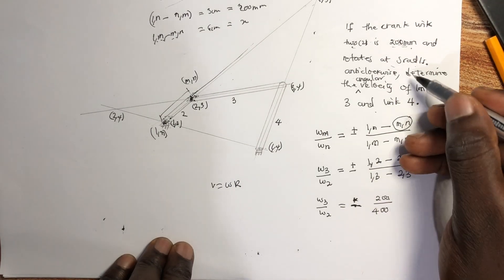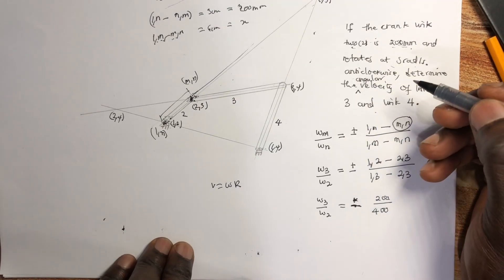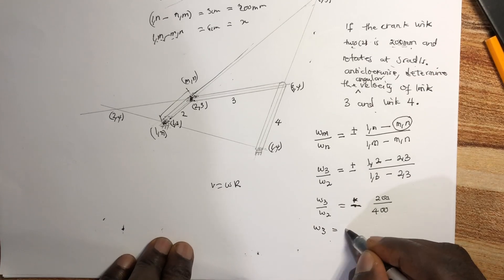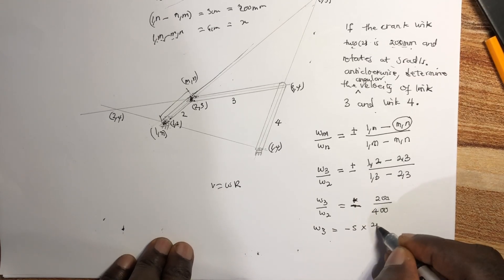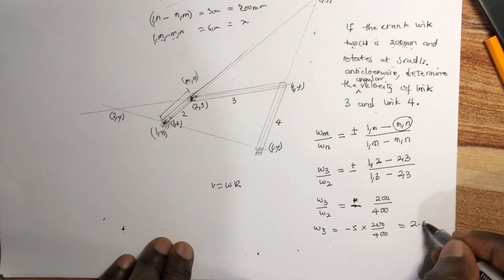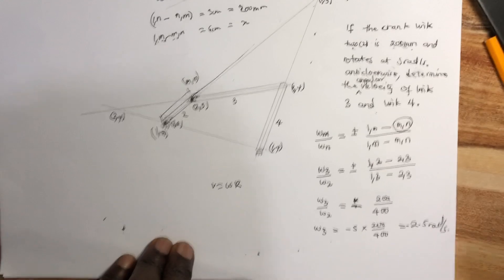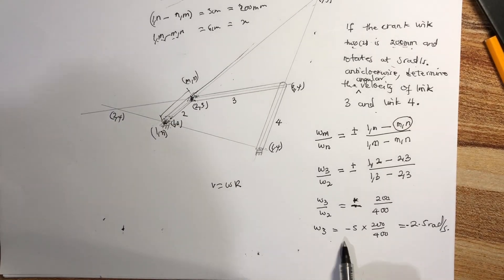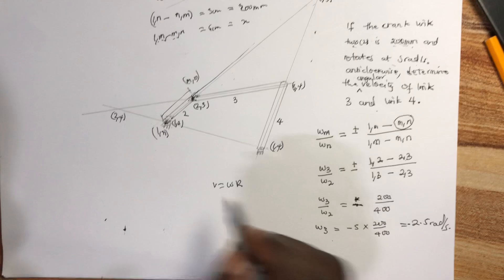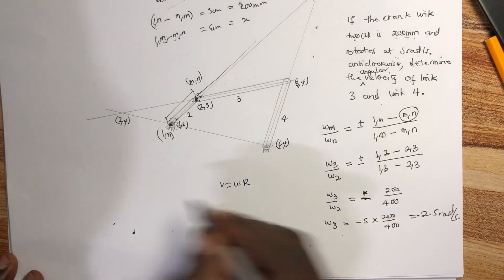Omega_2 was 5 radians per second anti-clockwise, which we take as positive. So omega_3 equals minus 5 times 200 over 400, which gives minus 2.5 radians per second. We now know the angular velocity of link 3. Next we find the angular velocity of link 4.